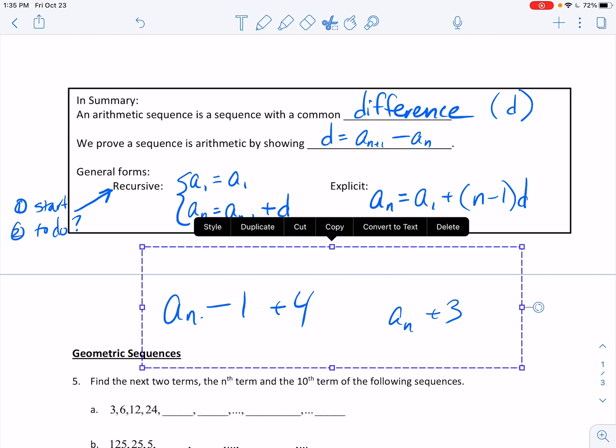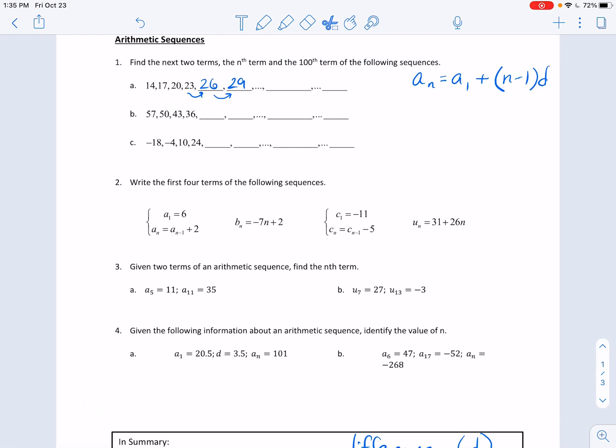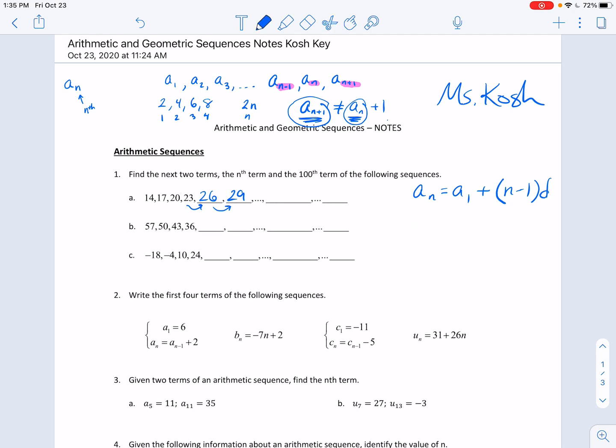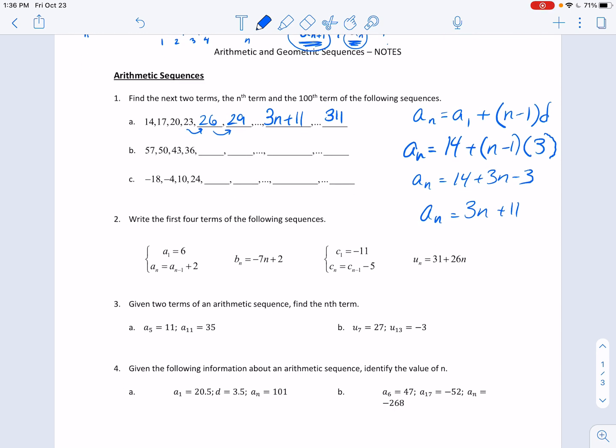If I want to get to the nth term, we needed to look back at the term that came right before it, which we said a minute ago was the n minus 1th term. So the a sub n is going to be equal to the term right before it, a sub n minus 1, and we're adding that common difference. I hope that makes sense. Be careful with handwriting. If you tell me a sub n minus 1 plus 4, that to me looks like a sub n plus 3, which is not the same thing.